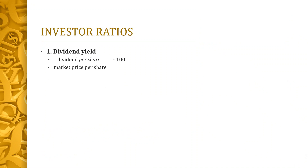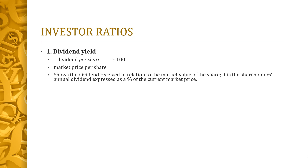There are five that you need to know. The first one is dividend yield. You take the dividend per share and divide it by the market price per share. That shows the amount of dividend received in relation to the market value of the share — the annual dividend expressed as a percentage of the current market price. Obviously, the higher the percentage, the better, as it shows a higher return on the investment.